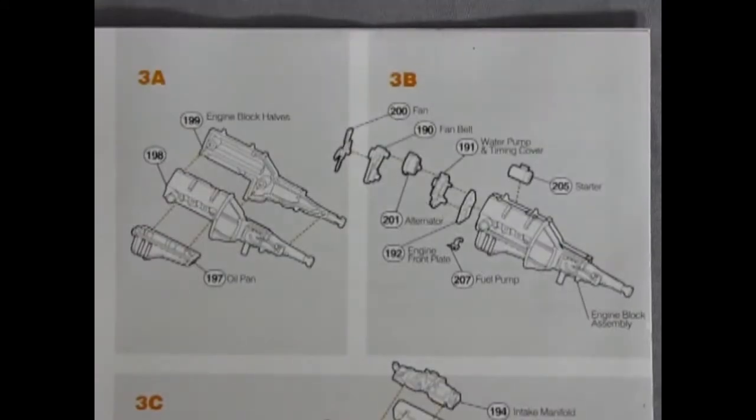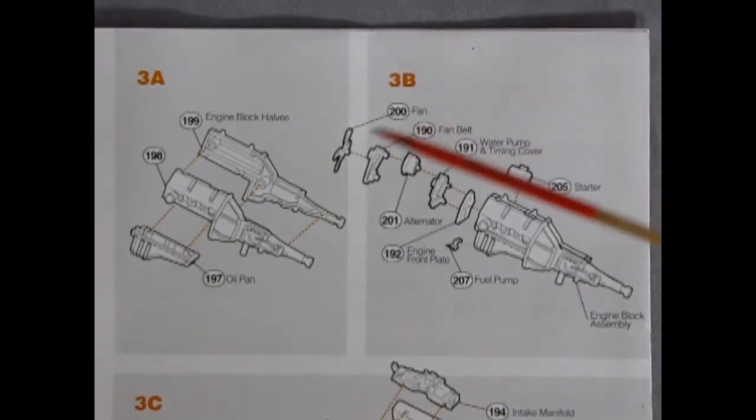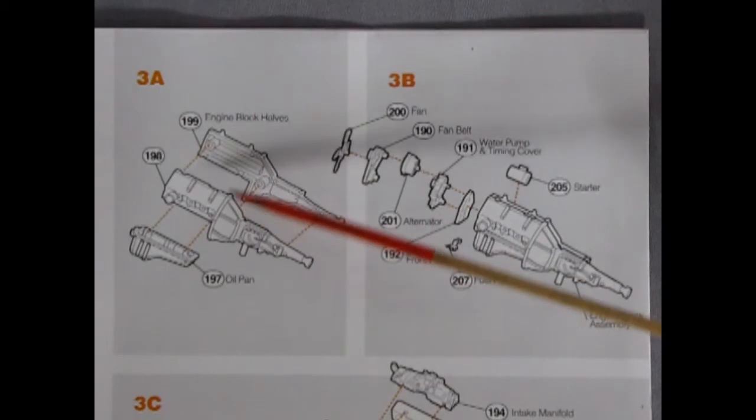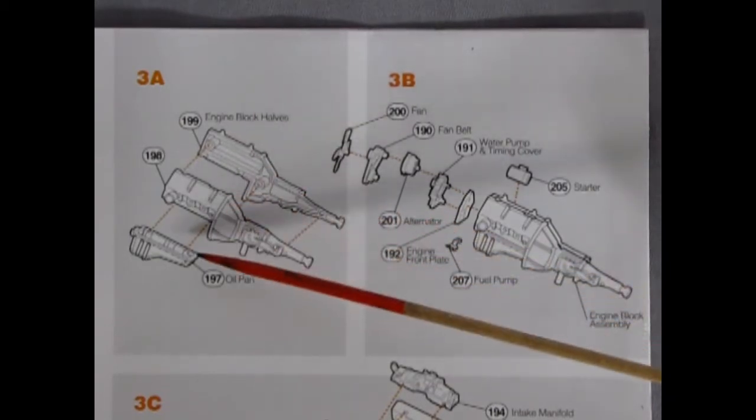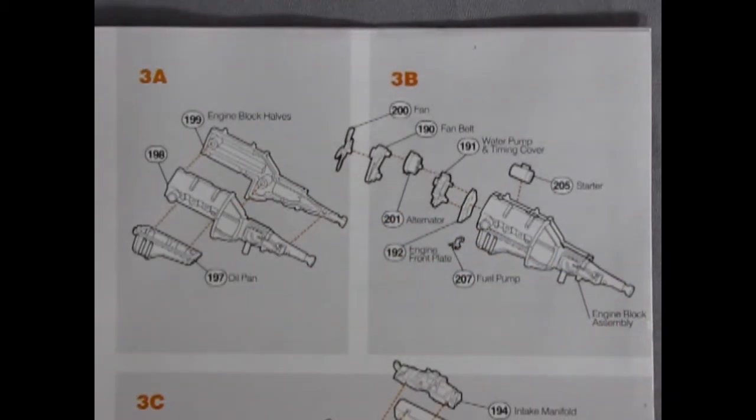Are you ready to build this really cool 302 Ford V8 engine? Well if so you got a real nice treat going on here. We have our right and left hand side engine block with our oil pan. Next up in our engine assembly we get to glue the fan to the fan belt with the alternator, the water pump and timing cover, our engine front plate, fuel pump, and starter motor all to the engine block assembly.